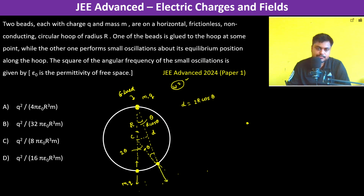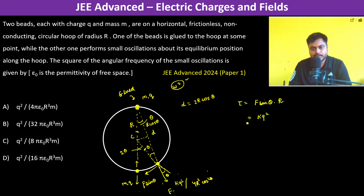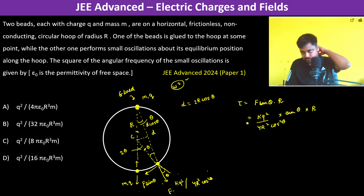The force is kQ²/(4R² cos²θ) and makes an angle θ with the normal. Therefore, the tangential force is F sinθ, and the torque about the center is τ = F sinθ · R = kQ²sinθ/(4R² cos²θ) · R.